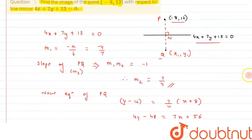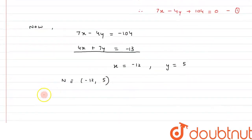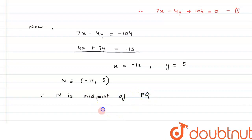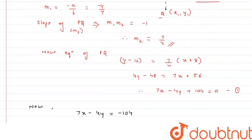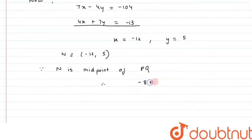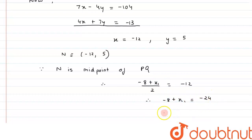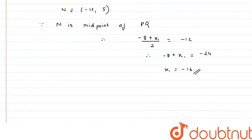We have the coordinate of N, and N is the midpoint of PQ, so we will use the midpoint formula. Since N is the midpoint of PQ, we can say: (minus 8 plus x1) divided by 2 equals minus 12. Therefore, minus 8 plus x1 equals minus 24, so the value of x1 comes out to be minus 16.